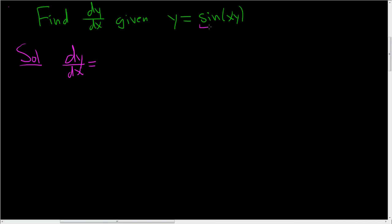On the right hand side we have to use the chain rule, so this is going to be the outside and this will be the inside. The derivative of sine is cosine, so you don't touch the inside, so cosine xy times the derivative of the inside.